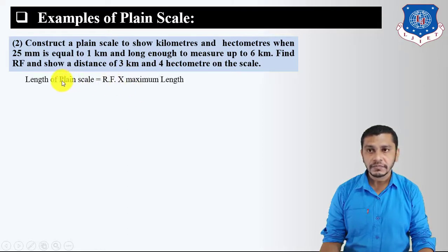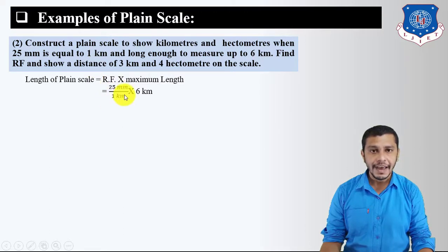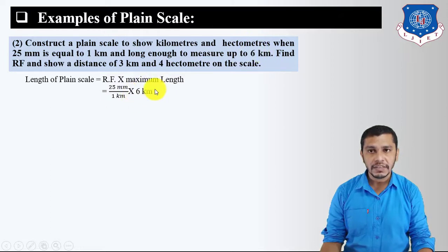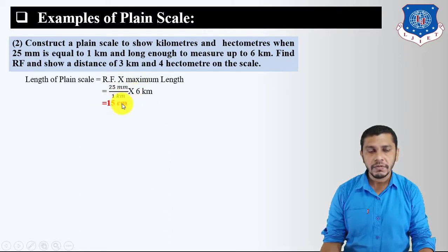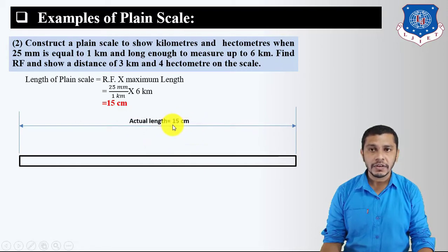The length of the plane scale equals RF × maximum length. RF = 25 mm / 1 km. So length = (25 mm / 1 km) × 6 km = 150 mm = 15 centimeters. Draw a scale of length 15 cm. The drawing length of each main division = 15 / 6 = 2.5 cm. The main scale represents kilometers: 0, 1, 2, 3, 4, 5, and 6.